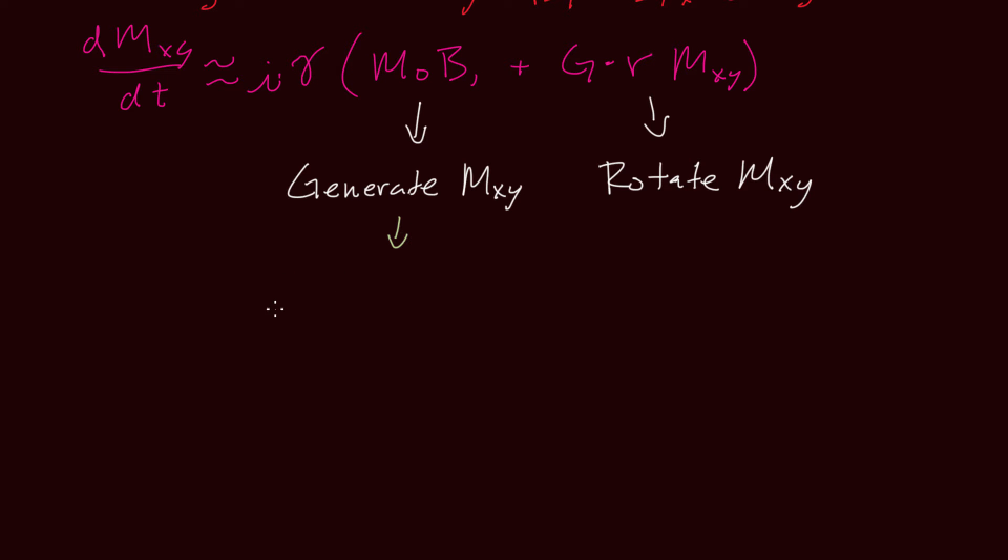The transverse magnetization generated in a time interval dt at a time t is gamma m0 times b1 times dt, and the i shows that an RF pulse along x rotates magnetization towards y, and vice versa. Once generated, that transverse magnetization rotates under the gradient field, and at some later time capital T, the total rotation is given by the integral of the gradient field from when it was generated to time capital T.